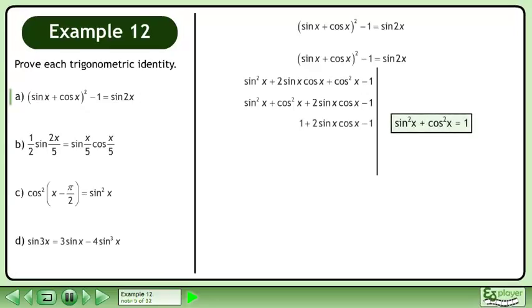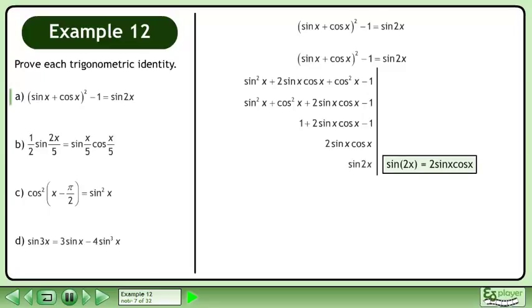sin²x + cos²x equals 1. This gives us 2sin x cos x. This condenses to sin 2x. The left side equals the right side, completing the proof.